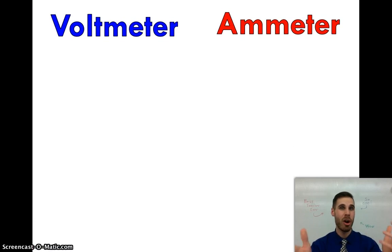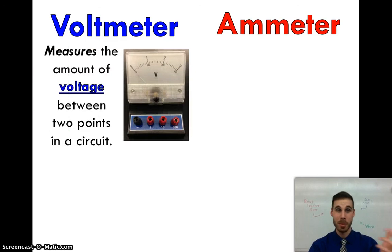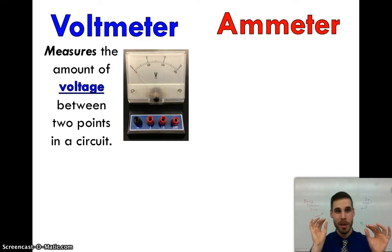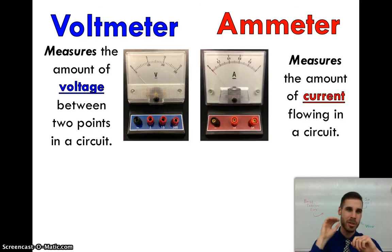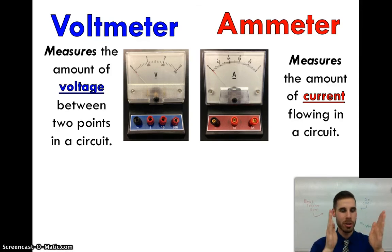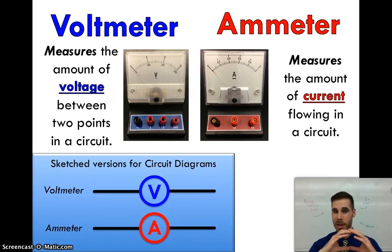That covers all the circuit devices. But there are also measurement tools: a voltmeter and an ammeter. They operate similarly but measure different things. A voltmeter measures the amount of voltage between two points in a circuit — it looks at two different points and tells you the difference in electrical pressure. An ammeter sits right in the middle of a circuit and measures the amount of flow, or current, moving through it. In circuit diagrams, a voltmeter is drawn as a circle with a V, and an ammeter is drawn as a circle with an A.